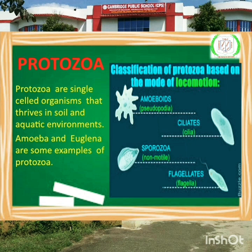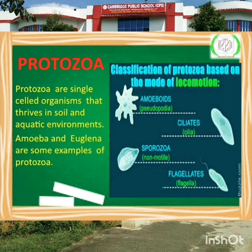Now, protozoa. Protozoa are single-celled organisms that thrive in soil and aquatic environments. This is present in water. Amoeba, Euglena, these are some examples of protozoa. In the picture you can see protozoa's examples such as amoeboids, ciliates, sporozoa, flagellates.